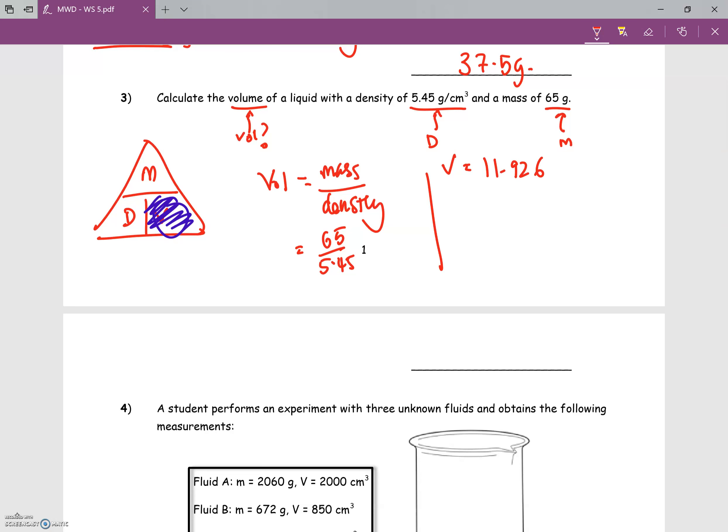If I round off to 3 significant figures, it will be 11.9 cm³. This is to 3SF.